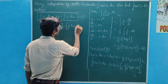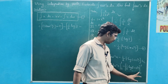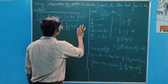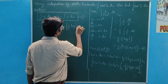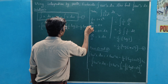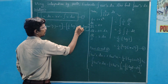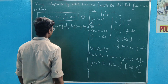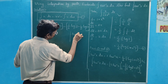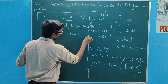Upper limit gives 1 plus 1 equals 2, then minus lower limit. The lower limit is 0, so we apply 1 by 2. Therefore tan inverse of 1 equals π/4.